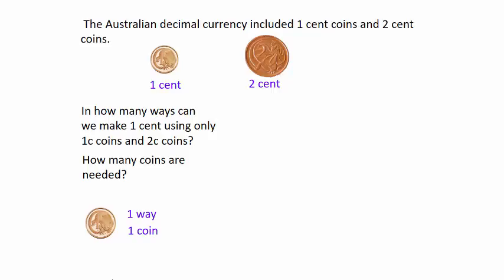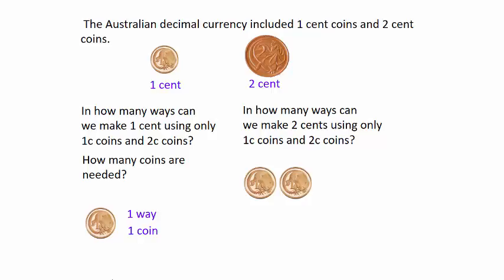What about if we want a total now of 2 cents using either or both of these two coins? There's one way where we use two 1 cent coins or we could use just a single 2 cent coin, so there are two different ways and there are three coins used all together.